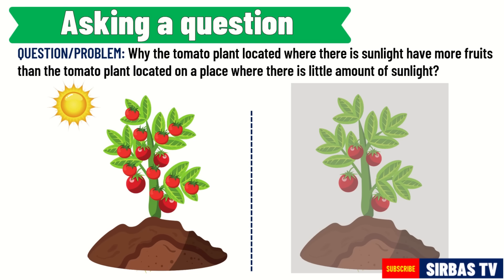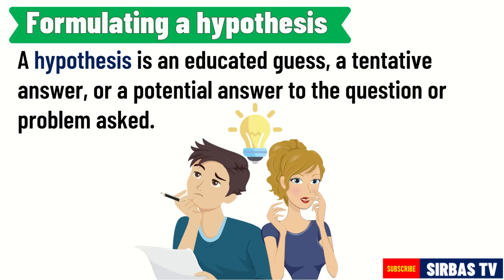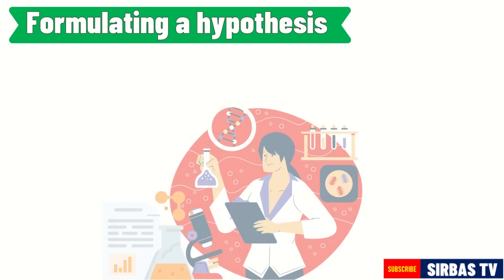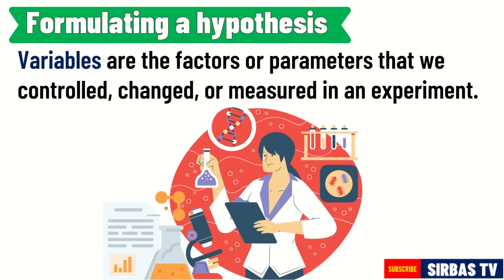The next step is to formulate a hypothesis from our question. A hypothesis is an educated guess, a tentative answer, or a potential answer to the question or problem asked. The hypothesis must be stated in such a way that it can be tested through an experiment and should contain variables. Variables are the factors or parameters that we control, change, or measure in an experiment. A hypothesis will also serve as your guide in designing your experiment.